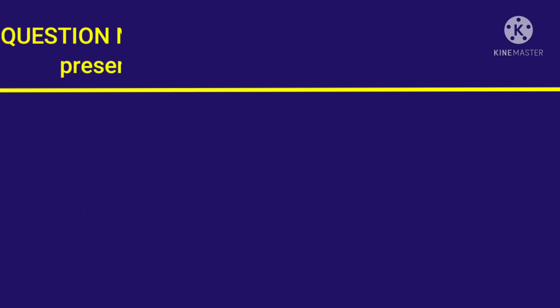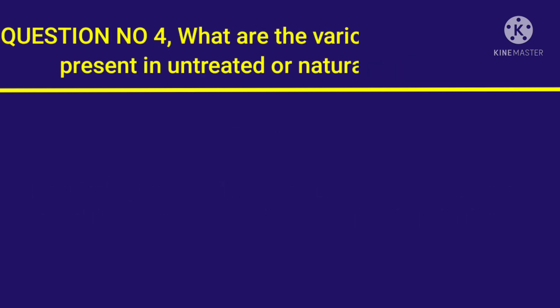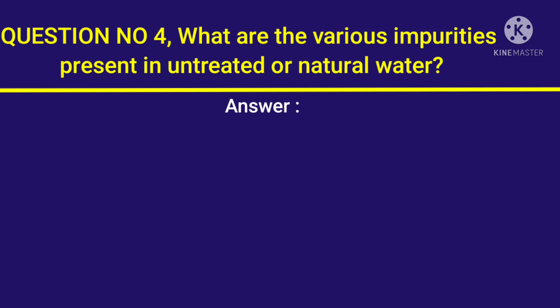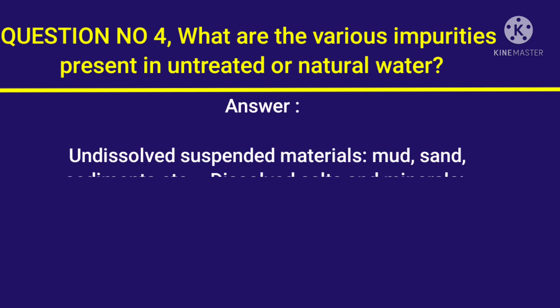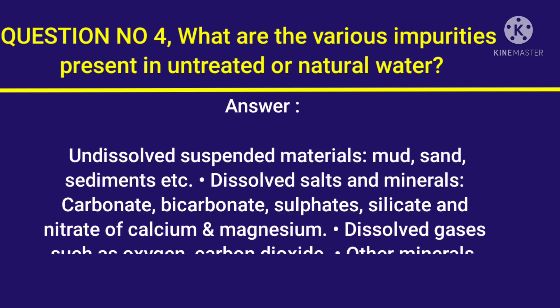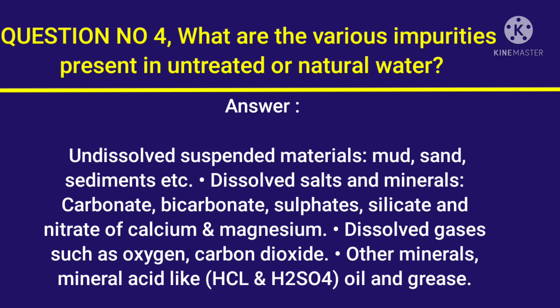Question number 4: What are the various impurities present in untreated or natural water? Answer: Undissolved suspended materials — mud, sand, sediments etc. Dissolved salts and minerals — carbonate, bicarbonate, sulfates, silicate and nitrate of calcium and magnesium.